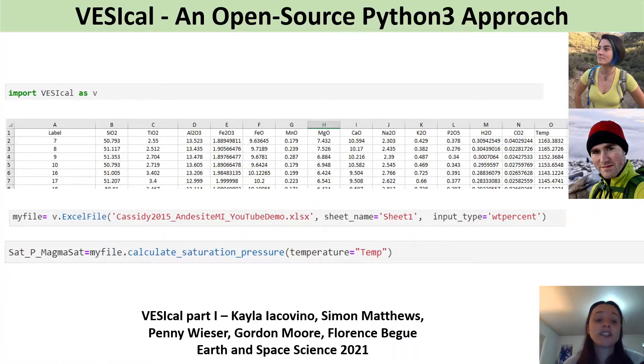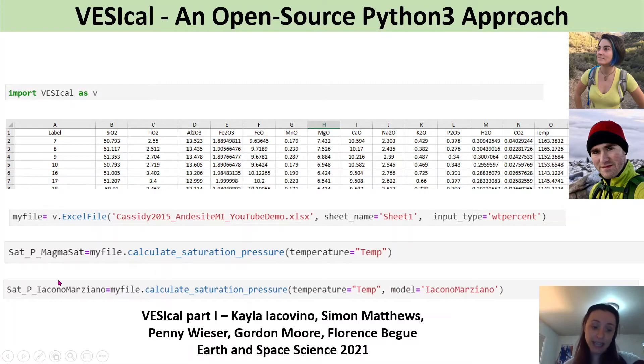And then say you want to calculate saturation pressures using Magnusap, this one line of code will calculate saturation pressures for the entire file. And say you're interested in how say Magmasat and Icon and Marziano compare. All you have to do is take the same line and add this extra word model equals Icon and Marziano and that will just save you a massive amount of time. This literally changed the course of my PhD so I'm very grateful to Simon and Kaila for that.